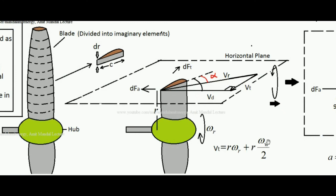So V_t = r·ω_r + r·ω_w/2, and V_r is the relative velocity this segment experiences. The aerofoil must maintain an optimum angle of attack alpha to generate maximum lift — the lift force acts inside the screen, pushing the blade to spin. However, V_d is constant while V_t depends on r, so as r increases, V_t increases and V_r changes direction. Therefore, from root to tip the blade is given a twist so that the angle of attack alpha always remains at its optimum value.